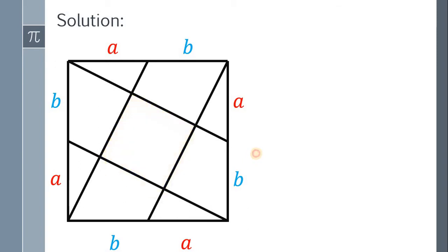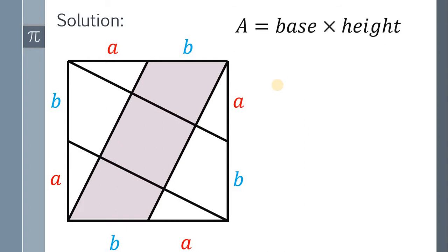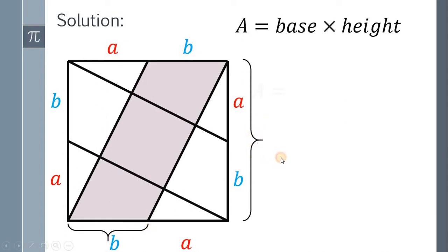To find the area of the inner square, we need to consider this parallelogram. Our goal is to find the area of this parallelogram in two different ways. The formula for the area of a parallelogram is base times height. Let side B be the base and the height be A plus B, so the area equals B times (A plus B).